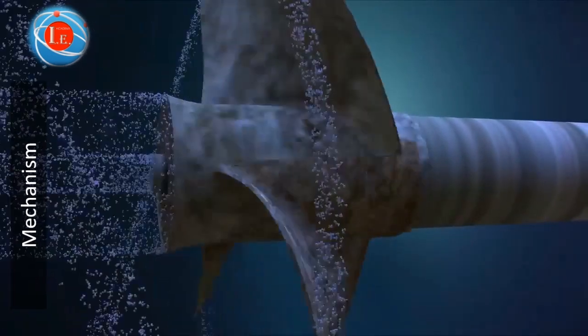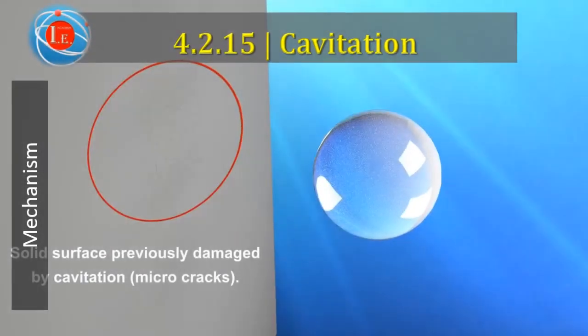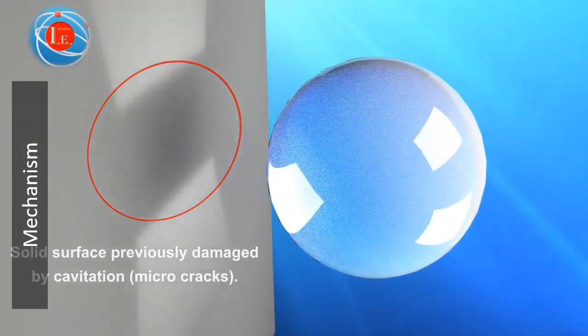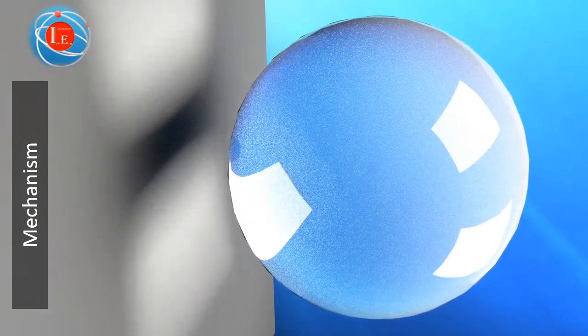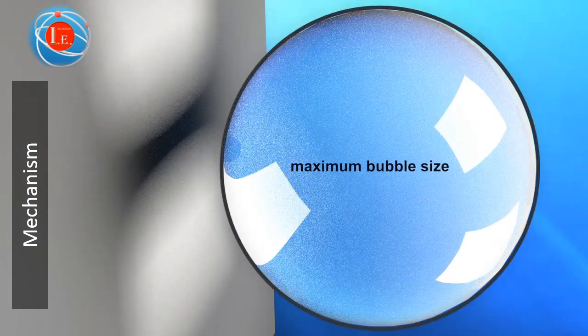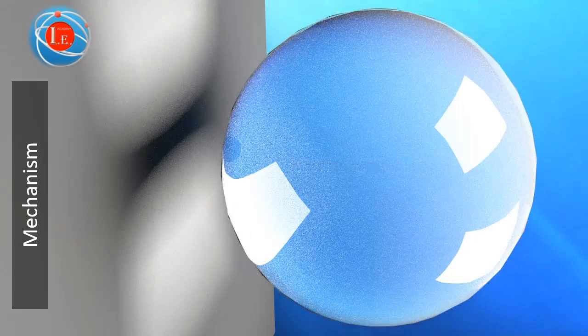Pressure differences in high-velocity liquids can cause vapor or gas pockets. These gas pockets will collapse abruptly due to the pressure change and explode near the material surface.